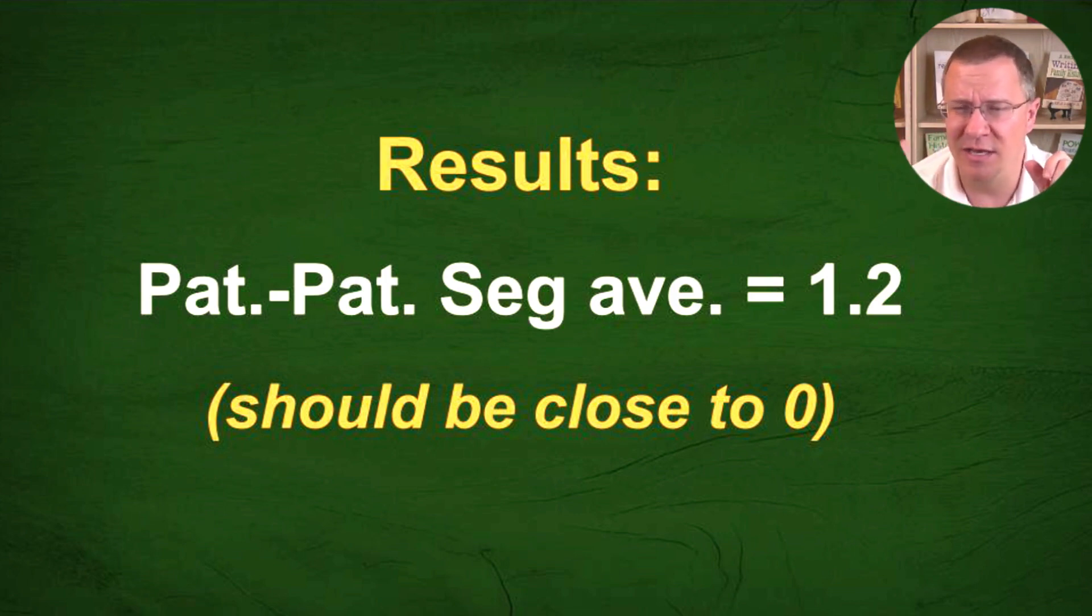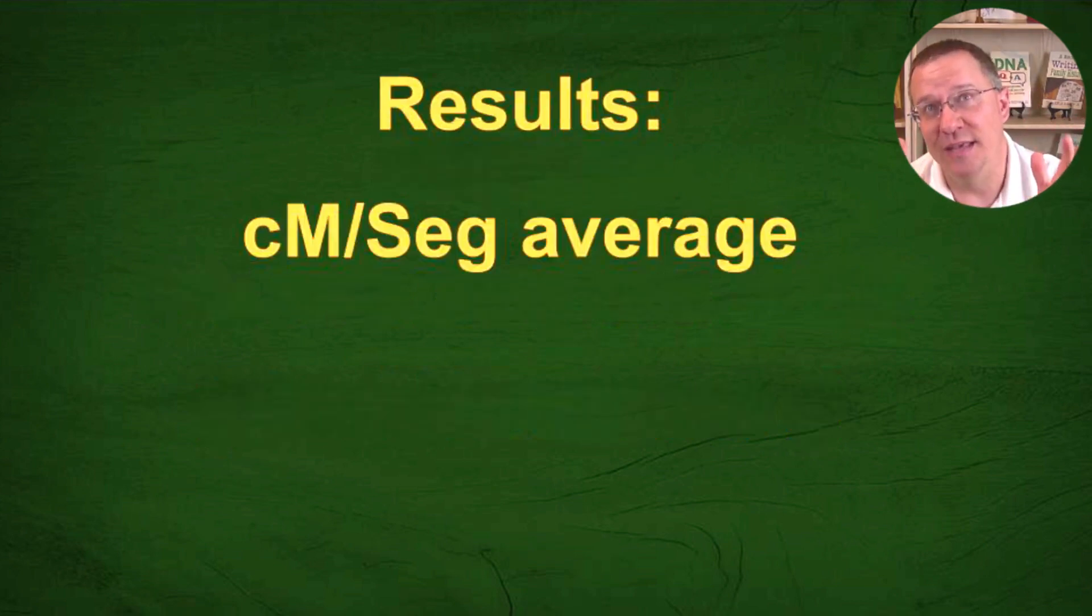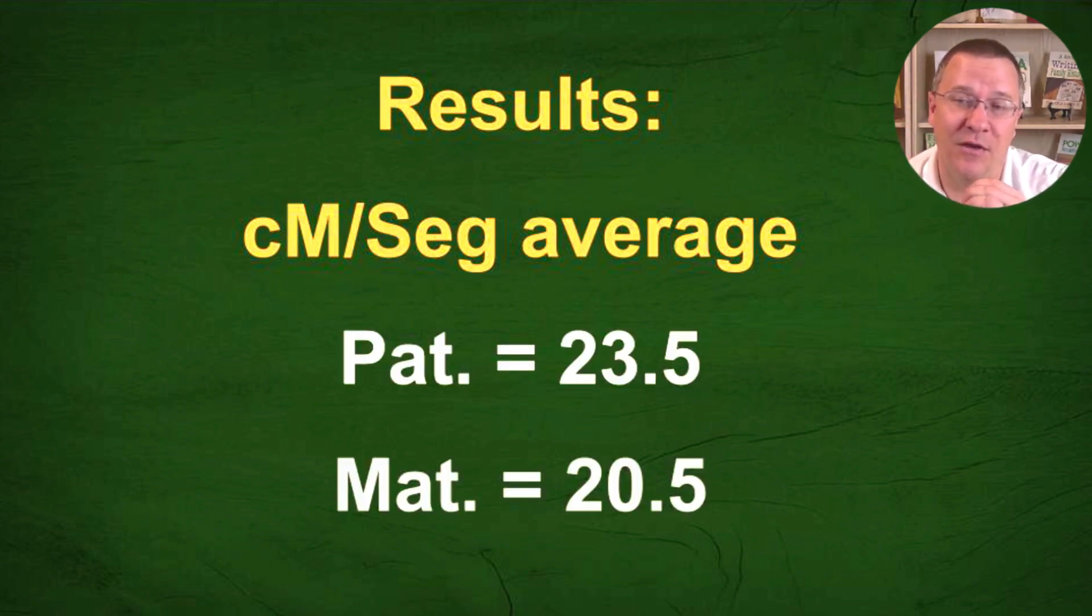So let me go on to the last one, the centimorgans per segment average. Now, on this, I was expecting his to be smaller number, but not as close as what the results were. In other words, I have a paternal of 23.5 and a maternal, his, of 20.5. Now, since on average maternals have 1.76 times more recombinations, I actually expected this number to be significantly less, probably in the neighborhood of 15 or so. And so, guess what? I checked with my brother also. Well, my brother, who again represents a paternal, he only had a 21 centimorgans per segment average. So it was actually really close to my cousin.